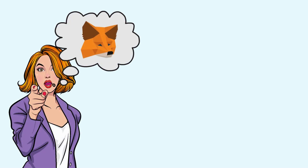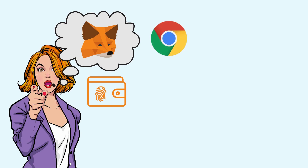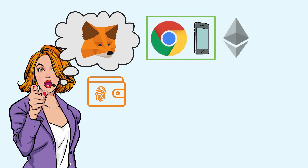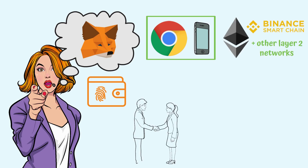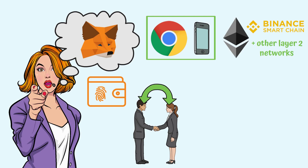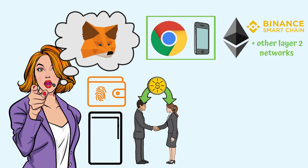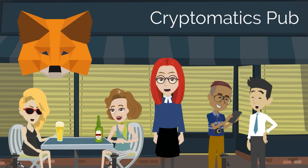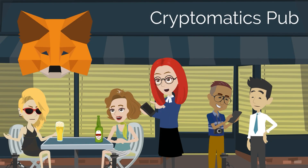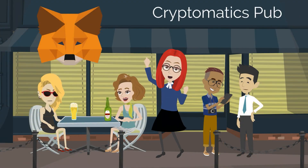How do you install Metamask on your browser? Metamask is a free digital wallet that you can install as a browser extension or mobile app in order to interact with the Ethereum network, but also with Binance Smart Chain or other Layer 2 networks. Metamask lets you send or receive digital assets, but also make direct transactions within the app. In this video, we will show you how to install and use this app, so stay with us till the end.